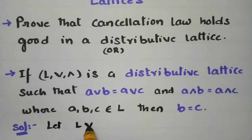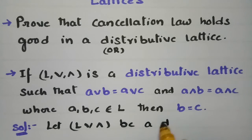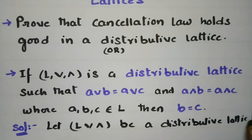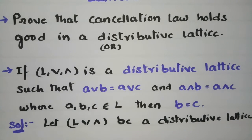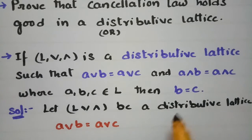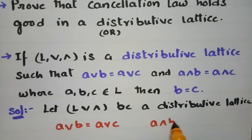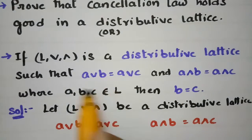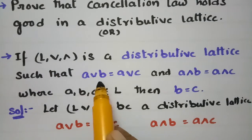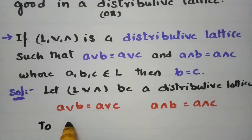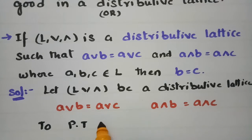Solution: Let L with join and meet be a distributive lattice. It is given that the lattice is a distributive lattice. Also given: a∨b = a∨c, and a∧b = a∧c. Here a, b, c are elements taken from the given lattice. We have to prove that b = c.